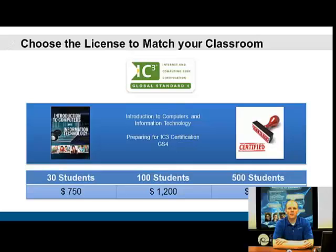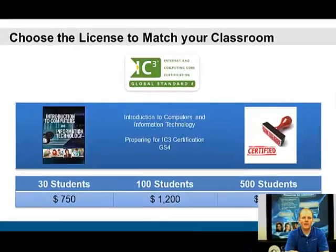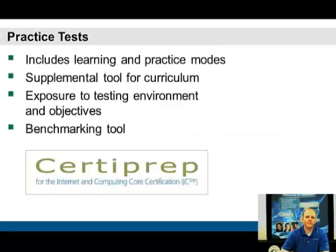The price of the new Pearson tool varies by number of students. The Pearson IC3 tool is for the GS4 standard and can be purchased for 30 students at $750, 100 students at $1,200, and 500 students at $2,500 — making this a very affordable tool.